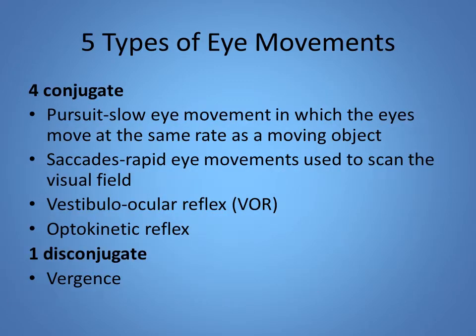Our eyes can move in many different directions. When we complete conjugate eye movements — the ones where our eyes are working together — we have opposing muscle groups working. So if we're looking to our left, the medial rectus on our right eye is working and the lateral rectus on our left eye is working, and that is what creates conjugate eye movements.